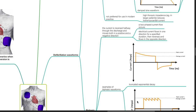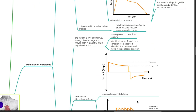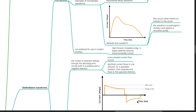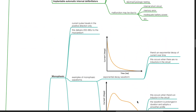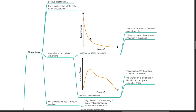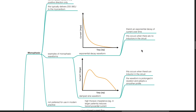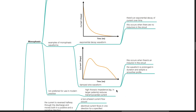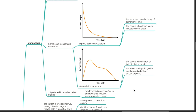Defibrillation waveforms can be divided into monophasic and biphasic. For monophasic waveform, the current pulse travels in the positive direction only, typically delivering 200 to 360 joules to the myocardium. Examples include exponential decay waveform, where there is an exponential decay of current over time occurring when there are no inductors in the circuit, and the damped sine waveform, which occurs when there is an inductor in the circuit and the waveform is prolonged in duration with a smoother profile. Monophasic waveforms are not preferred in modern practice.